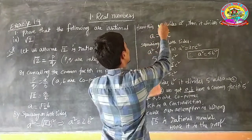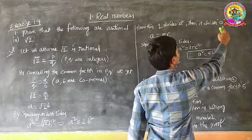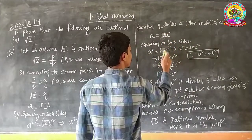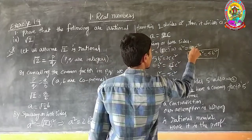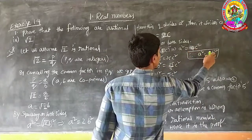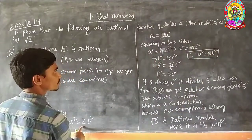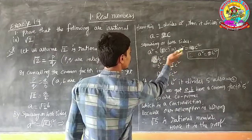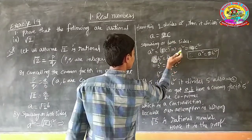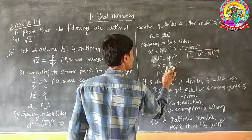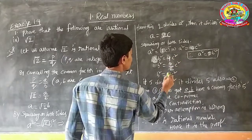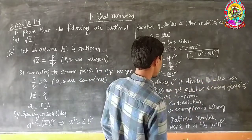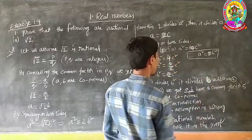From this, 2 divides A squared, so by the theorem it divides A also. So A equals 2C. Then A squared equals 4C squared. But A squared equals 2B squared, so 2B squared equals 4C squared, giving B squared equals 2C squared. Therefore 2 divides B squared, and then it divides B also.